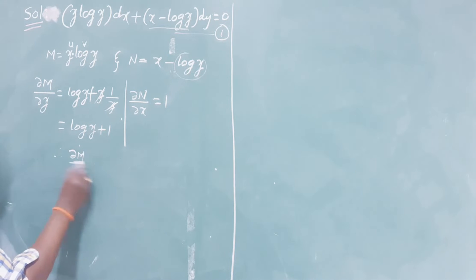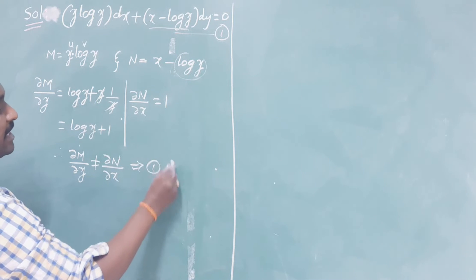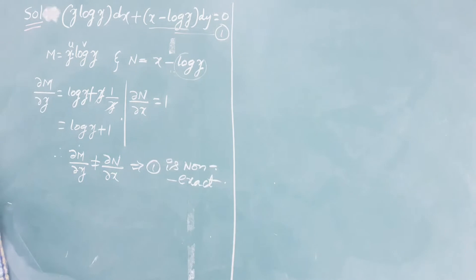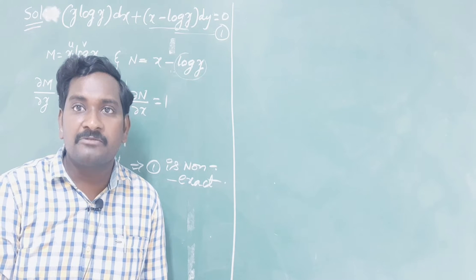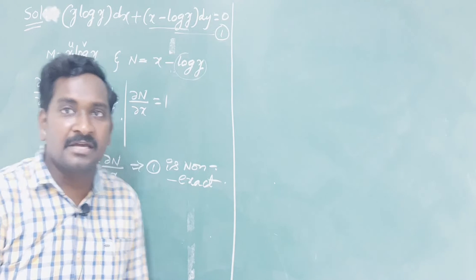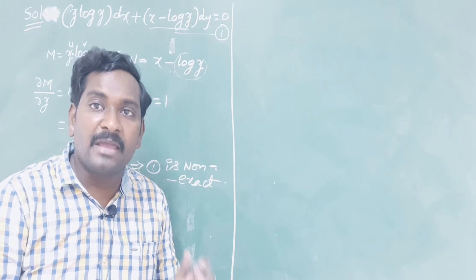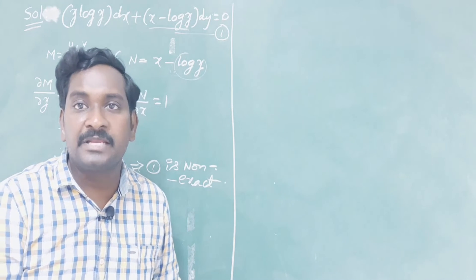Since ∂M/∂y = log(y) + 1 ≠ 1 = ∂N/∂x, the given equation is non-exact. We must find an integrating factor. The equation is not homogeneous, so 1/(Mx + Ny) is not an integrating factor. It is also not in the form y·f(x)dx + x·g(y)dy = 0, so 1/(Mx - Ny) fails too. The first two types of integrating factors fail.